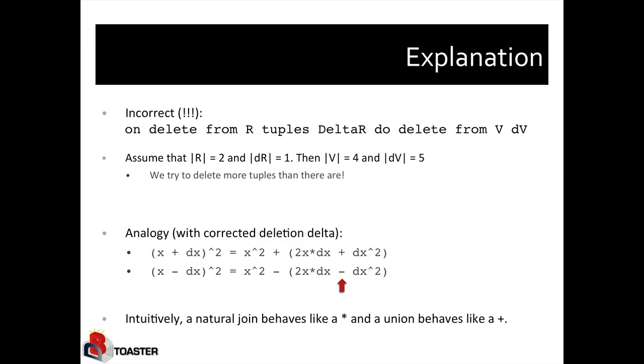Then the result of the view before the insert contains four copies of the tuple. And the delta query would produce five copies. And correctly after insertion, we would have nine copies of the same tuple, because it would be three squared copies of the tuple.